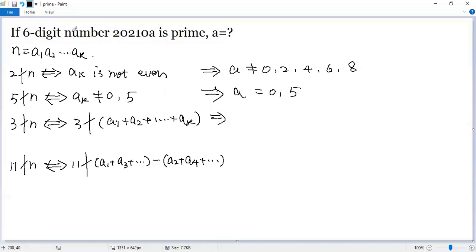Again, 3 cannot be a factor of that 6-digit number, so 3 cannot be a factor of the sum of the digits. Let's look at the sum of the digits. So 2 plus 0 plus 2 plus 1 plus 0 plus A, which is 5 plus A.